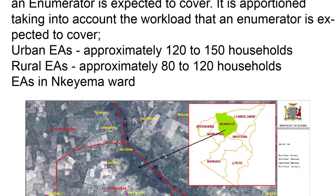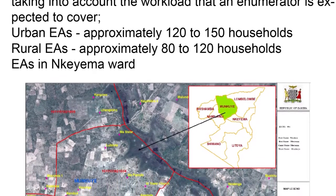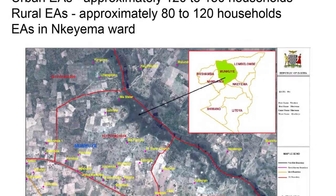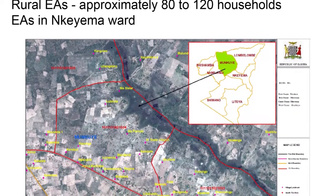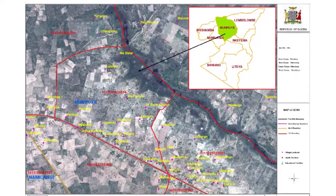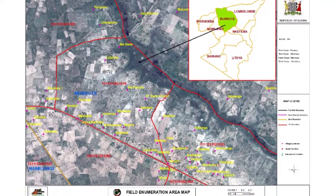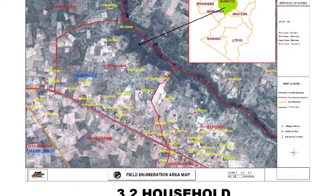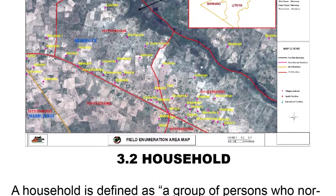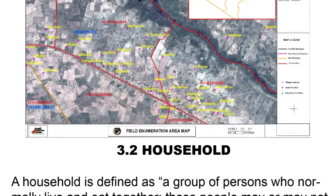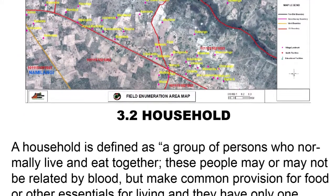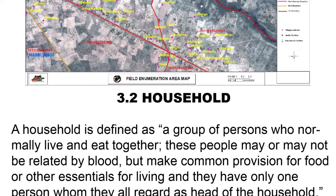An EA is a portion taking into account the workload that an enumerator is expected to cover. For example, urban EAs have approximately 120 to 150 households, while rural EAs have approximately 80 to 120 households.